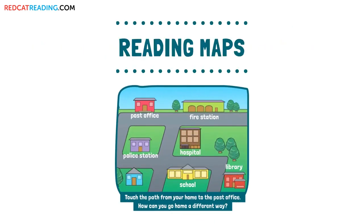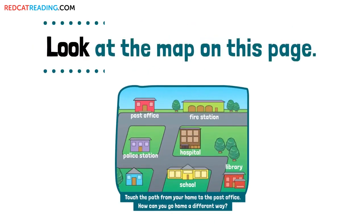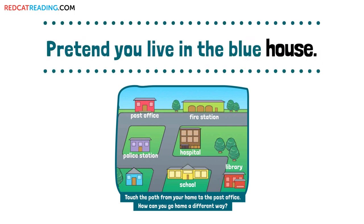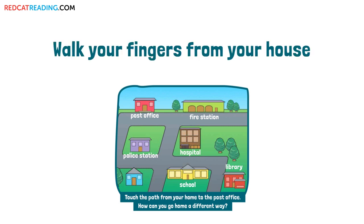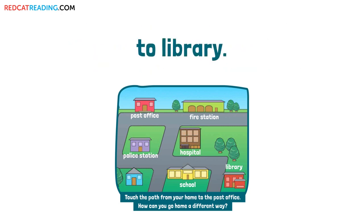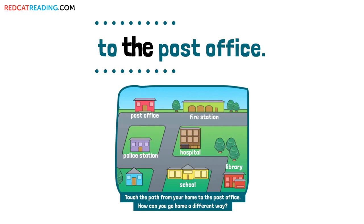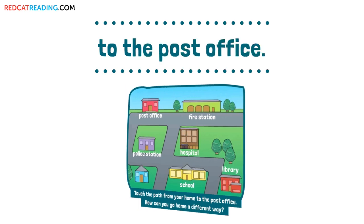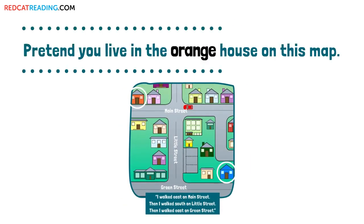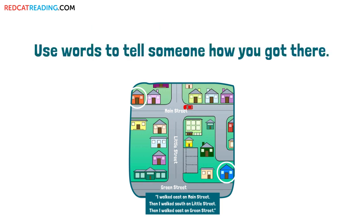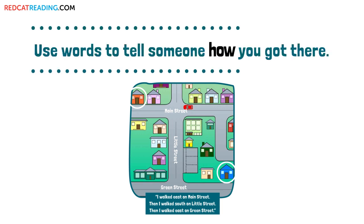Using maps. Look at the map on this page. Pretend you live in the Blue House. Walk your fingers from your house to the library. Now walk your fingers from the library to the post office. Pretend you live in the orange house on this map. Walk your fingers to the Blue House. Use words to tell someone how you got there.